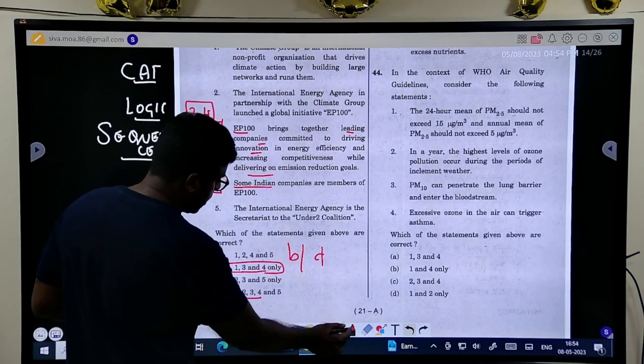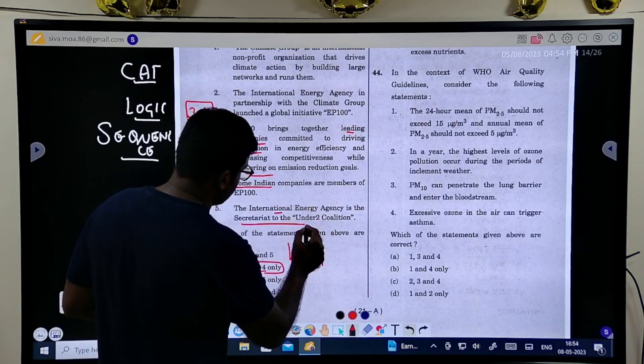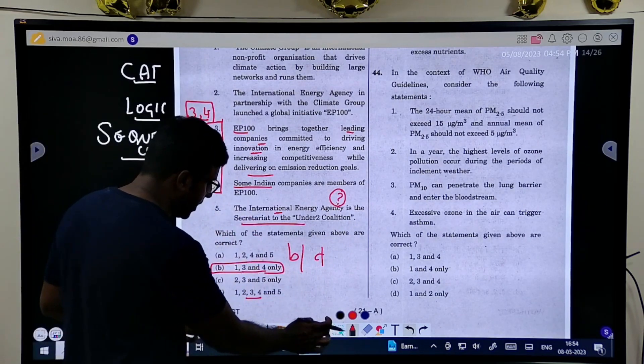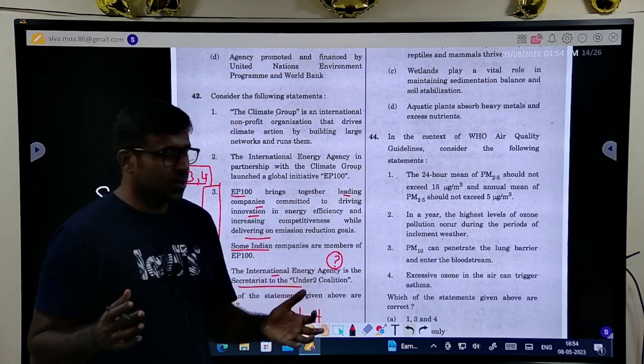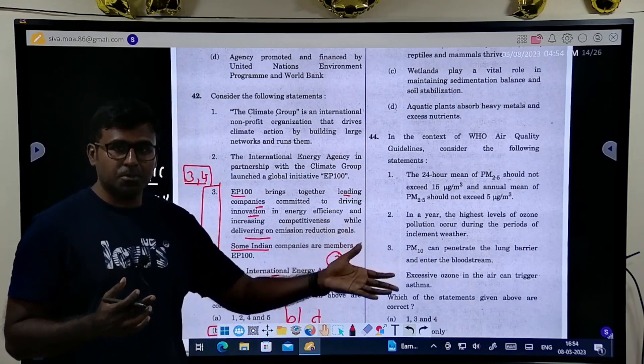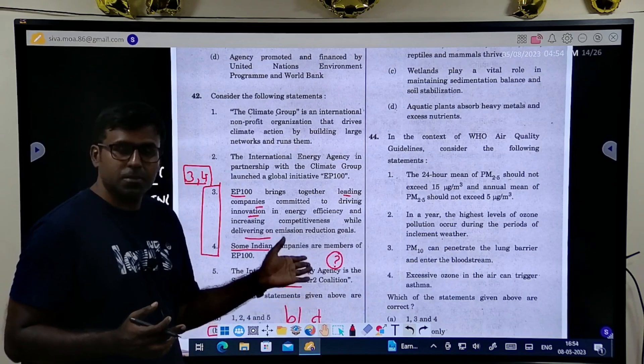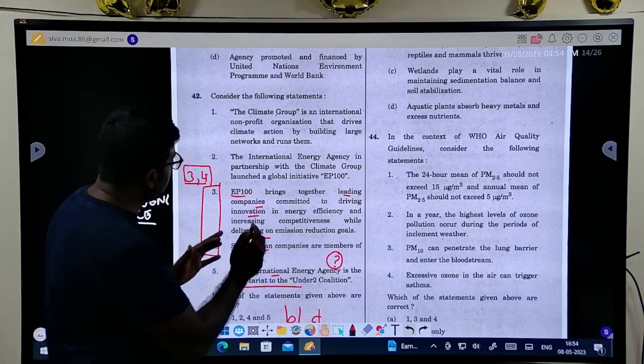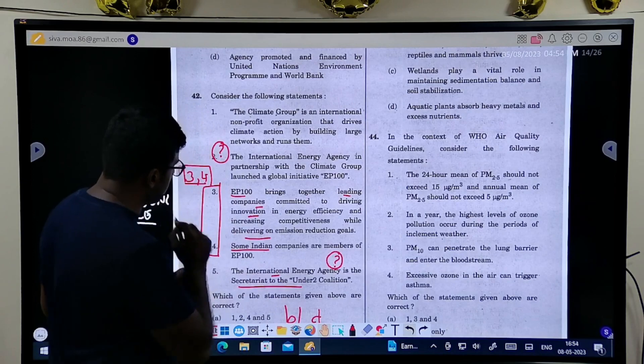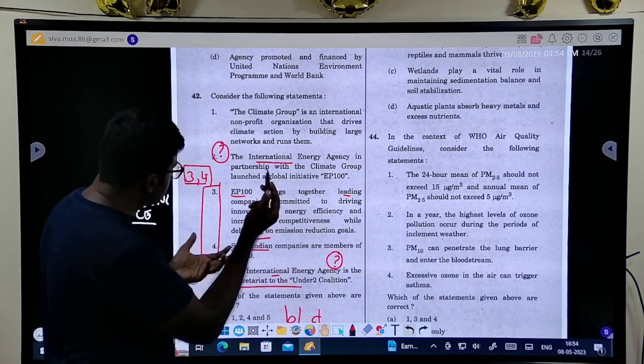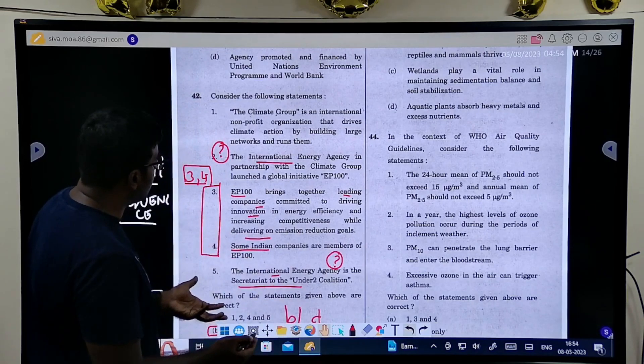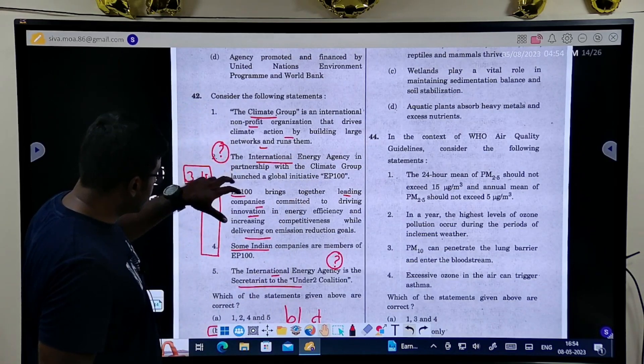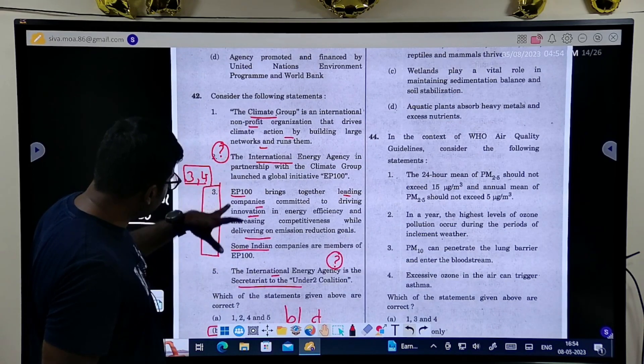In this many statements, some students asked how do you make an assessment of whether this is true or not? How can I make an assessment of whether international energy agency under 22 is true? This cannot be done inside the hall unless you know everything. If you are chat GPT, maybe it will be missing this information. But 3 and 4 are together.